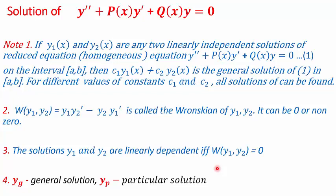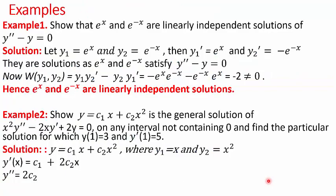This is the condition which we would be checking for all our problems. There are two common notations: yg for general solution and yp for particular solution. In the first example, we are asked to show that e^x and e^(−x) are linearly independent solutions of y'' − y = 0. To check whether each one is a solution, you differentiate them twice and substitute in the differential equation. If the right hand side becomes 0, they are solutions — I am skipping that part.